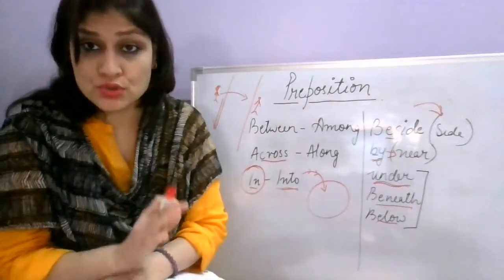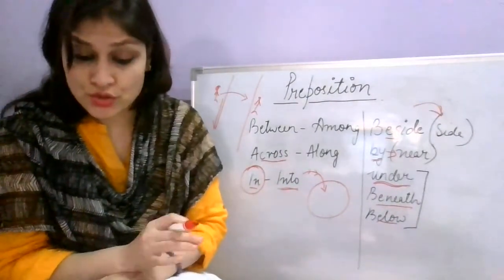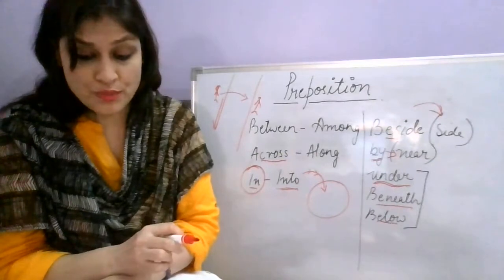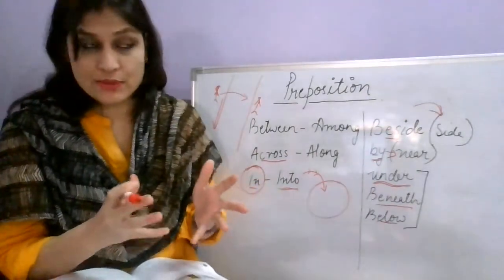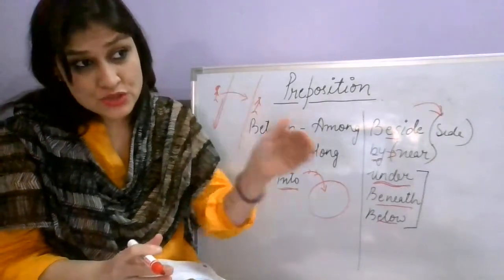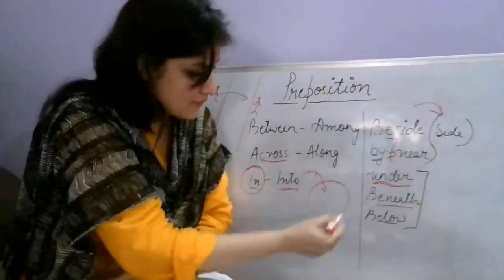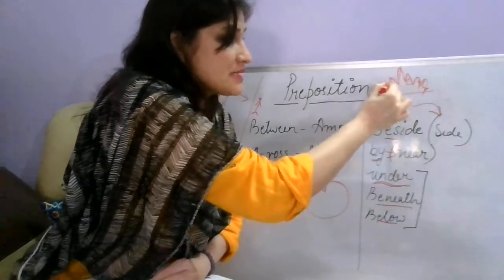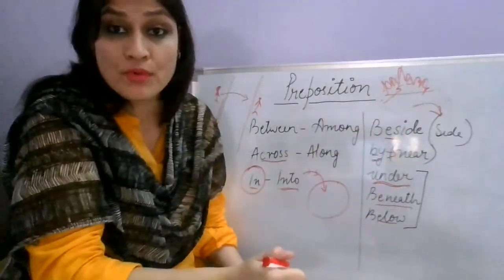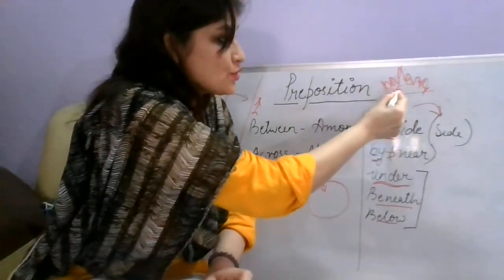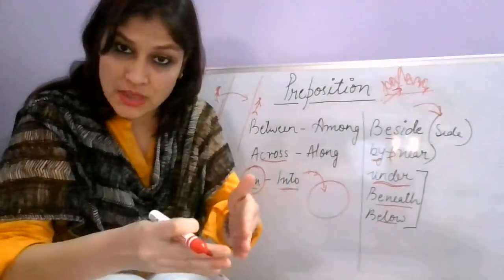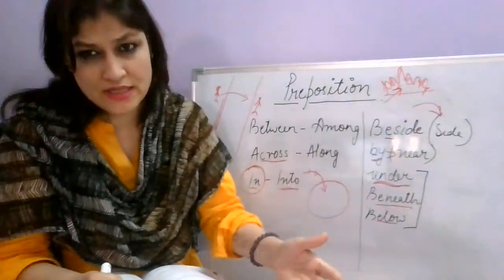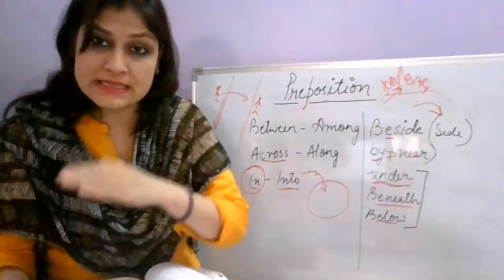'Through' means movement from one end to another — for example, 'it is difficult to pass through bushes'. Imagine there are many bushes and you have to pass through them — that is 'through'. Similarly, you may have to pass through a crowd. So 'through' always implies passing from one side to the other.